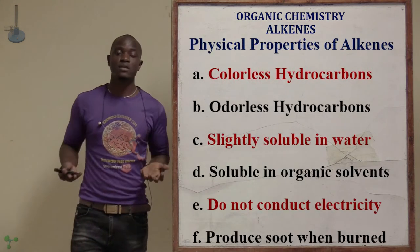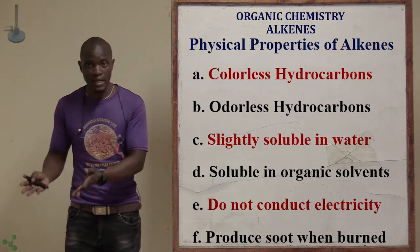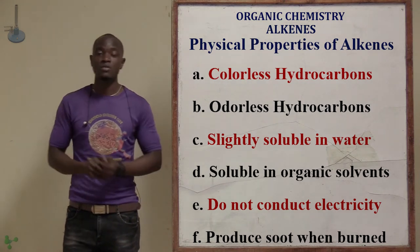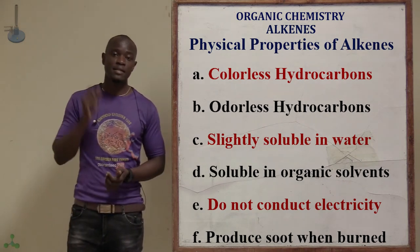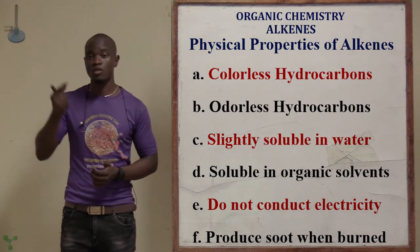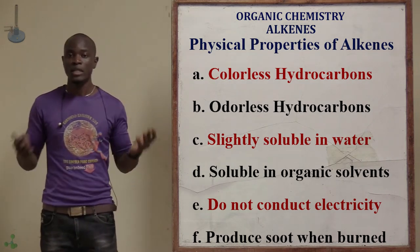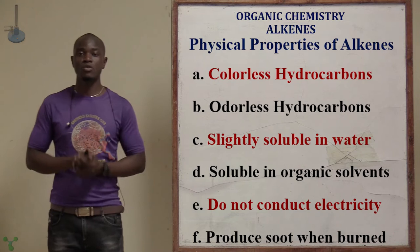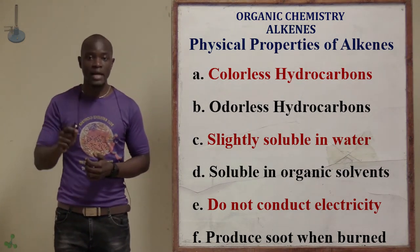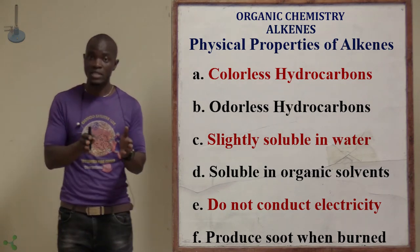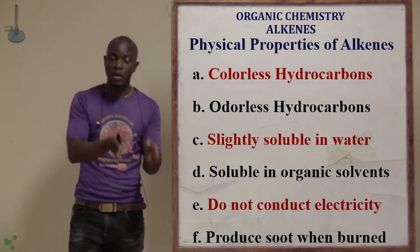In summary, these are the physical properties of alkenes. First, they are colorless — both the gases and the liquids are colorless. They are basically odorless. They are slightly soluble in water because in warm water they tend to be soluble, but in cold water they are highly insoluble — so generally we say they are slightly soluble in water. They are also highly soluble in organic solvents.